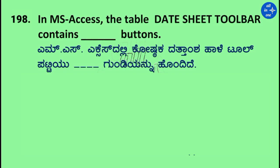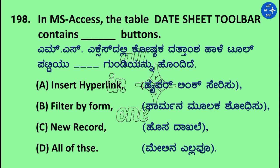Question: In MS Access, the Table Datasheet toolbar contains dash buttons. Options: Insert Hyperlink, Filter by Form, New Record, and All of these. Right answer is All of these.